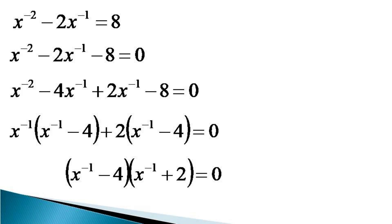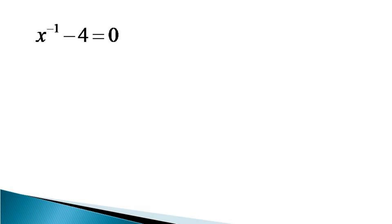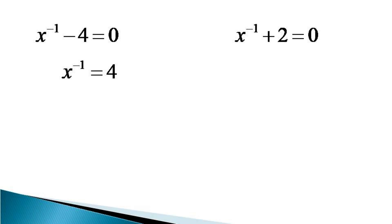Those two solutions are: x raised to the power minus 1 minus 4 is equal to 0, and x raised to the power minus 1 plus 2 is equal to 0. Considering the first expression, x raised to the power minus 1 is equal to 4, or 1 by x is equal to 4.